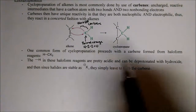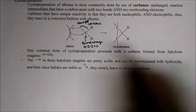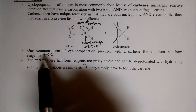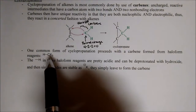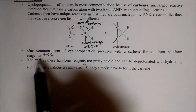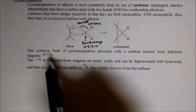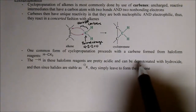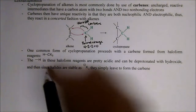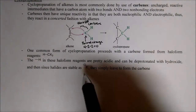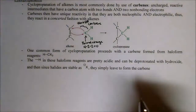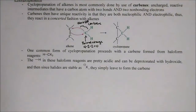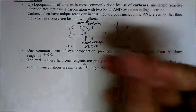The common form of cyclopropanation proceeds with haloform reagents — carbon bound to three halides with one C-H bond, written CHX₃. That C-H bond is pretty acidic because all the halides pull electron density away, so it can easily be deprotonated with hydroxide. Since halides are stable as X⁻, they leave to form the carbene.